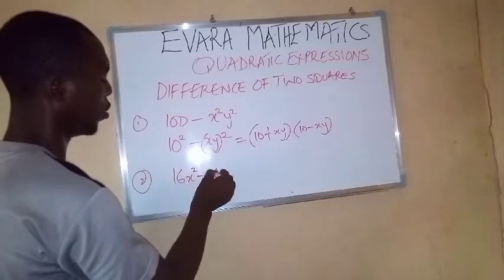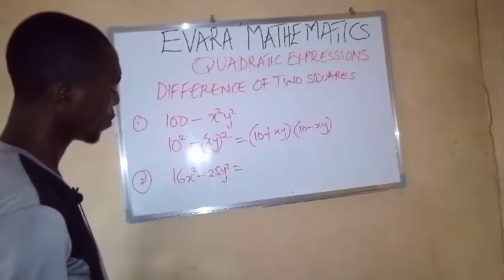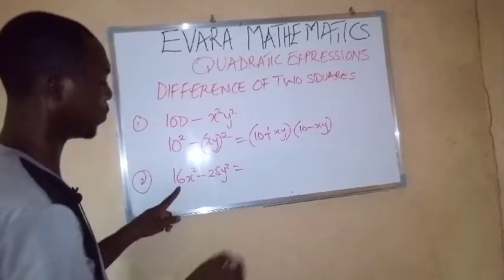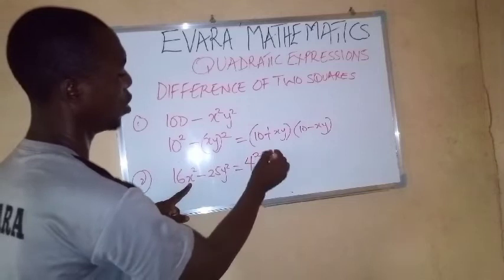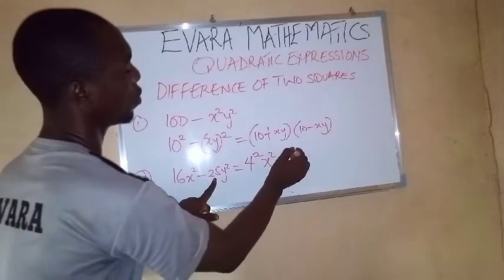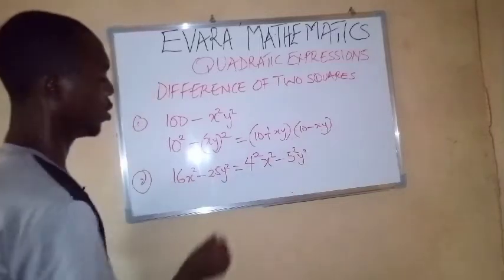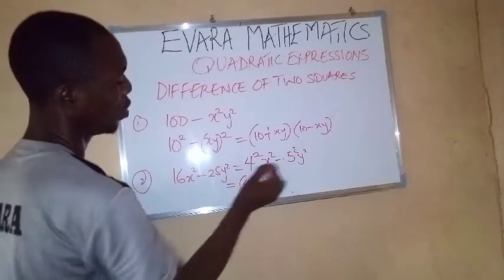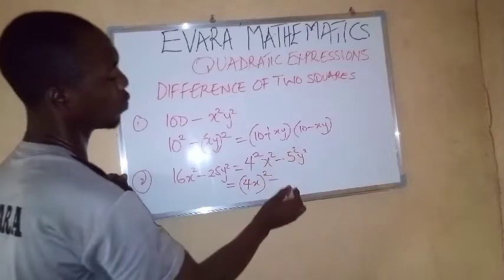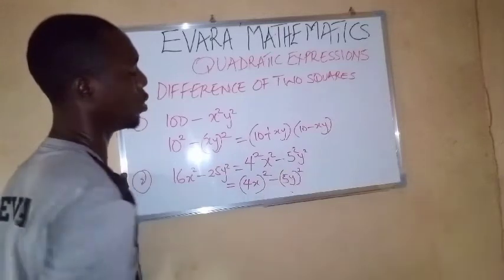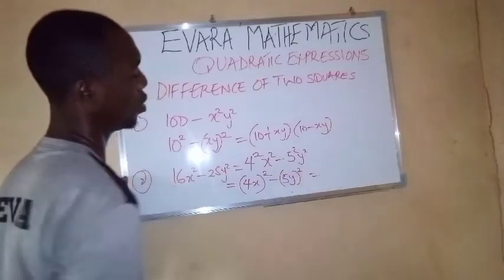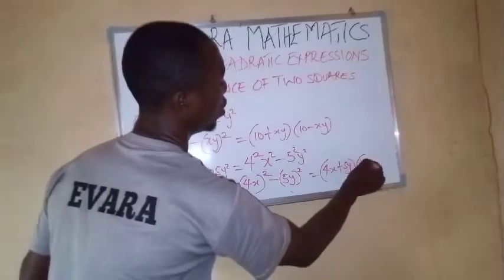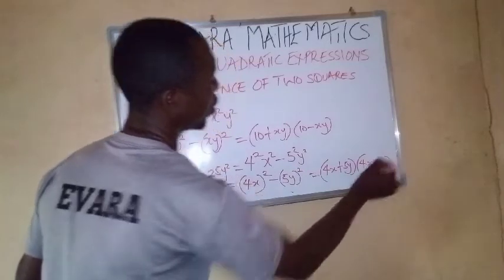Another example, 16x squared minus 25y squared. 16 is the perfect square and the square root of 16 is 4. So that means we can express 16 as 4 squared x squared minus 25 is 5 squared and y squared. So 4 squared x squared means 4x all squared. 5 squared y squared can be written as 5y squared. So the final answer here will be in bracket 4x plus 5y then 4x minus 5y.